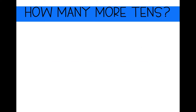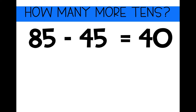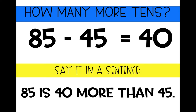Let's try another one: 85 minus 45. Remember, we're looking at our tens place. We have eight tens and four tens. What is the difference between eight tens and four tens? If you notice, that's a doubles fact — eight minus four equals four. So it would be four tens, which is 40. Let's say it in a sentence: 85 is 40 more than 45.